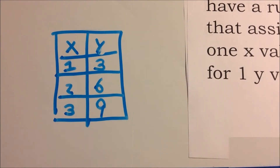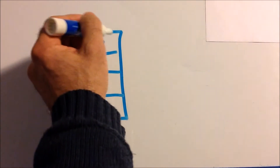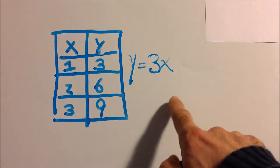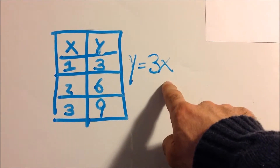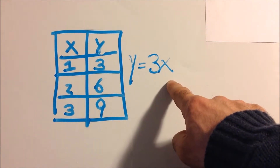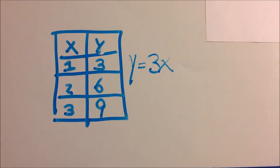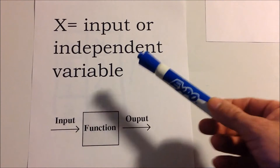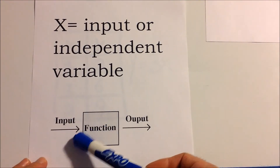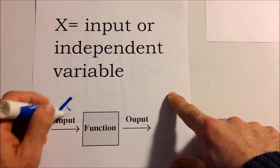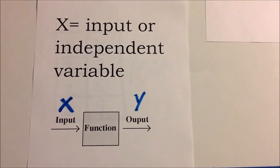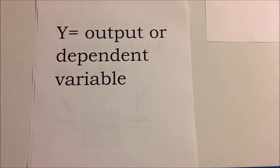Since we're multiplying x by three, the equation is y equals 3x. Whatever x is, we know what y is — x is independent, y depends on x. For example, if x is 9, then 9 times 3 is 27, so y is 27. The input is the independent variable x, which goes into the function box, and the output is y, the dependent variable.